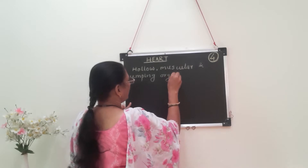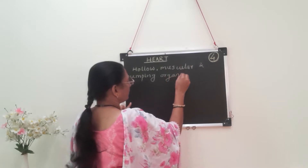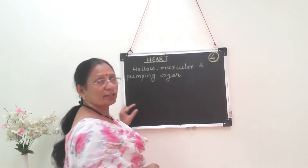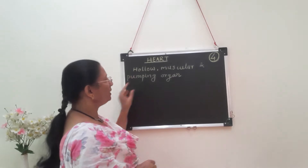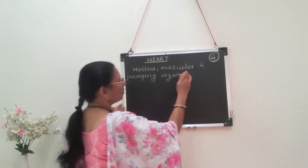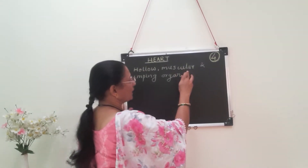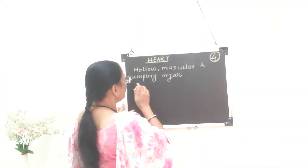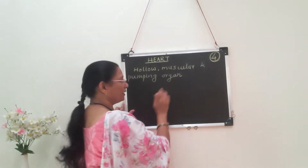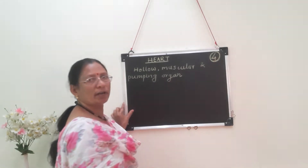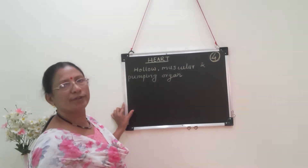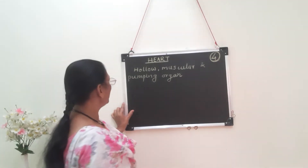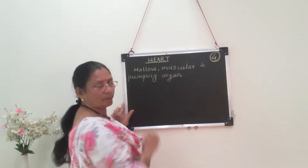Heart is hollow internally, meaning cavities are present inside which are filled with blood. It is made up of muscles, hence muscular, and it pumps the blood so that blood is distributed to all parts of the body, hence it is called a pumping organ.